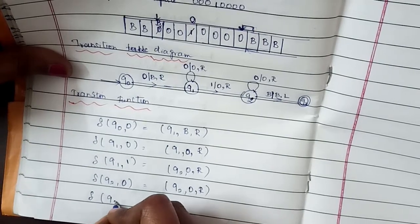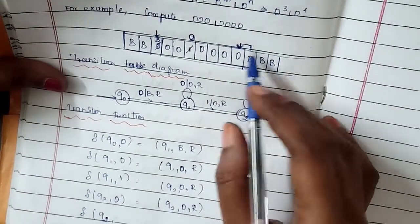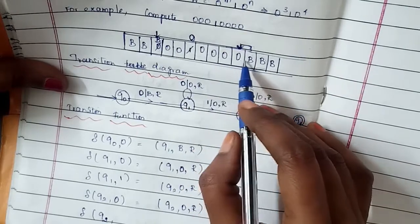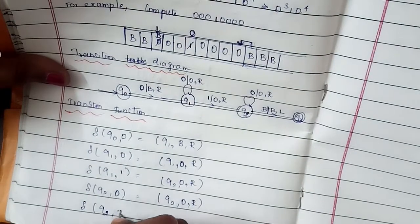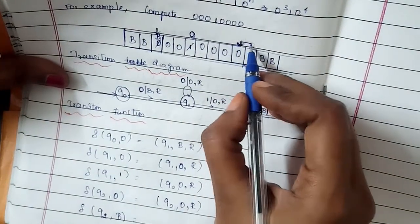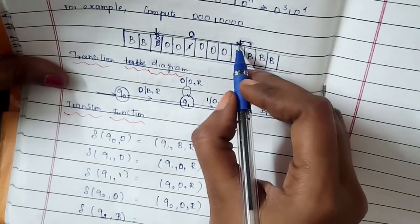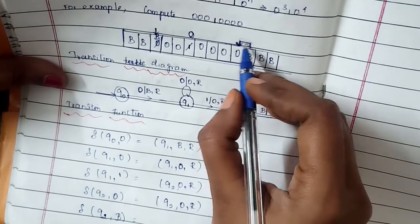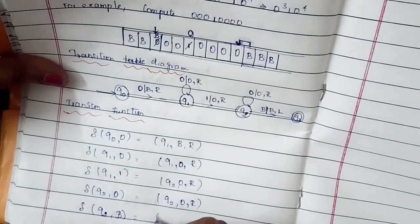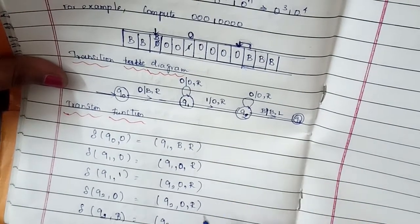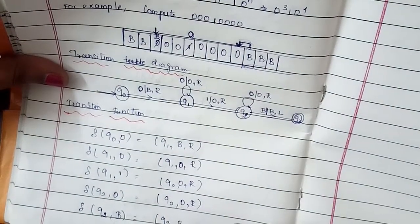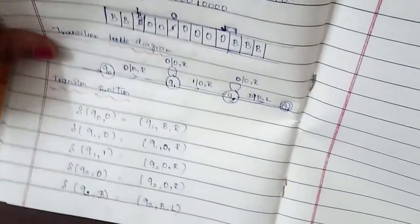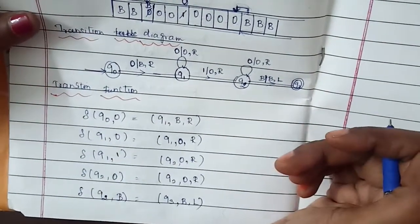Once the input string is exhausted and the machine sees the blank symbol in state q2, it moves in the left direction and stops the tape head at the end of the string. That is the final state. So: δ(q2, b) → (q3, b, L). This is what the transition function looks like.